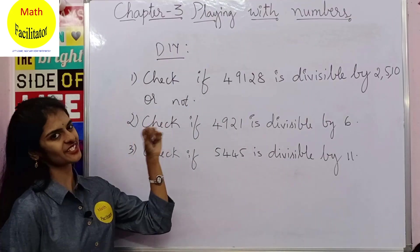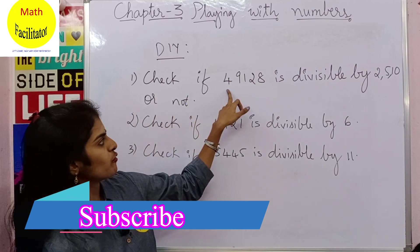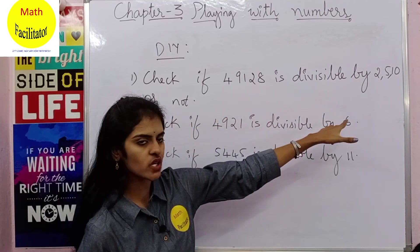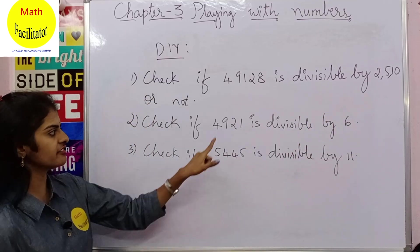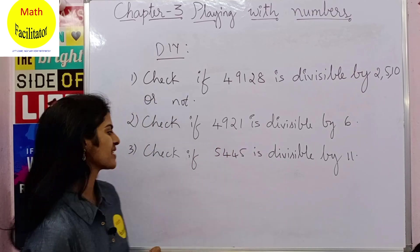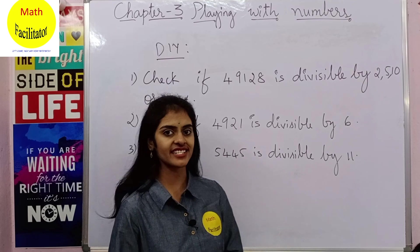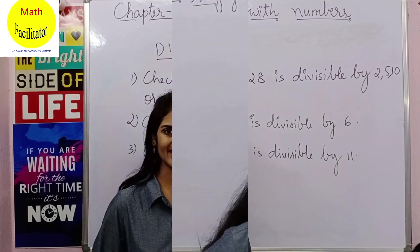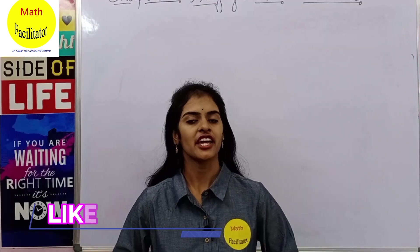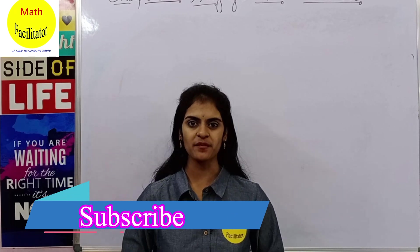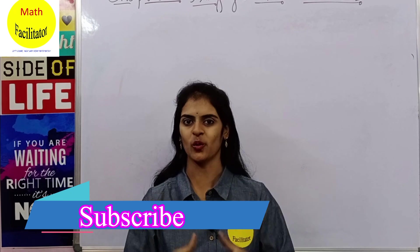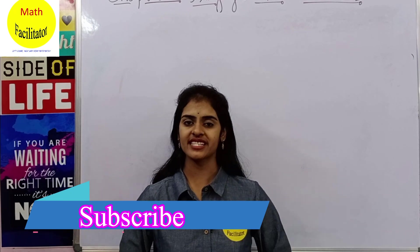Let's check our understanding with a 'Do It Yourself': Check if 49128 is divisible by 2, 5, and 10. Also check if 4921 is divisible by 6, and if 5445 is divisible by 11. This brings us to the end of this video. If you liked it, give it a thumbs up, share with your friends, and subscribe. You can also follow on Facebook and Instagram — links are in the description below.